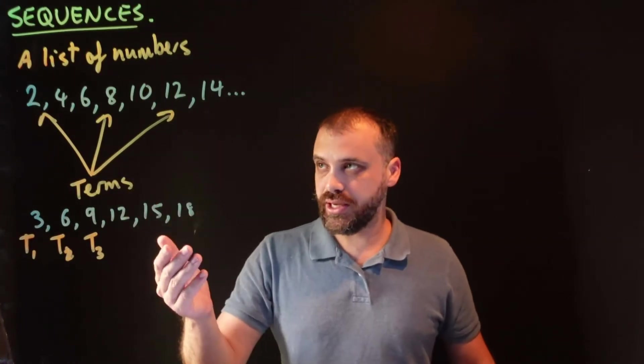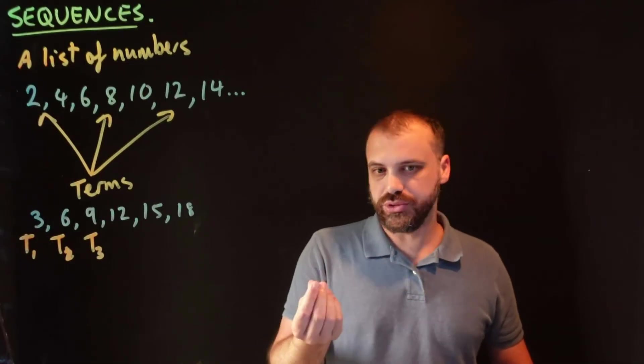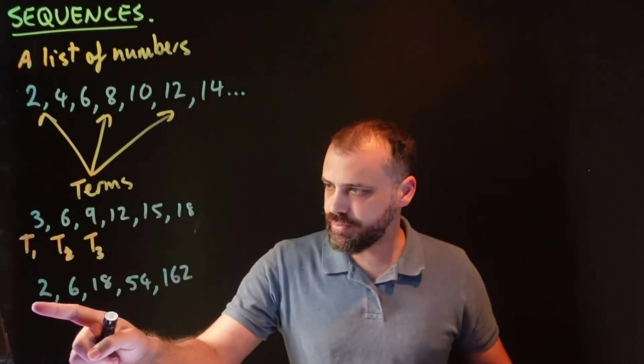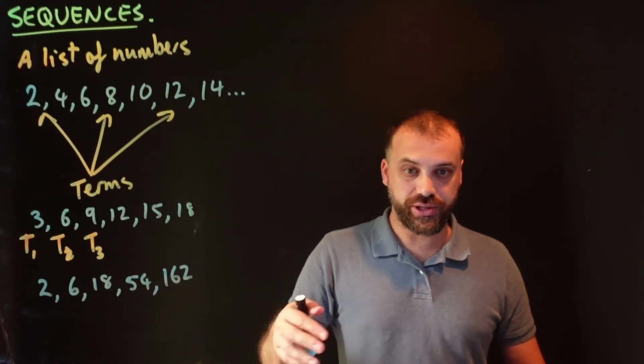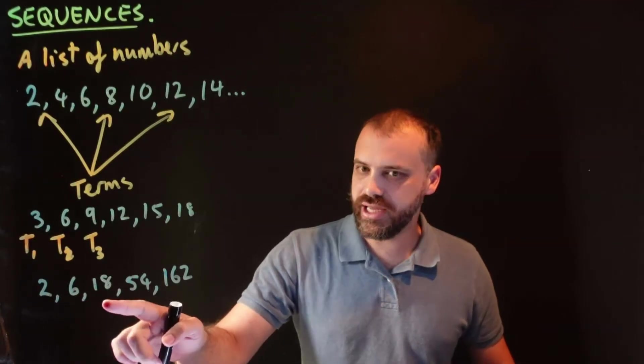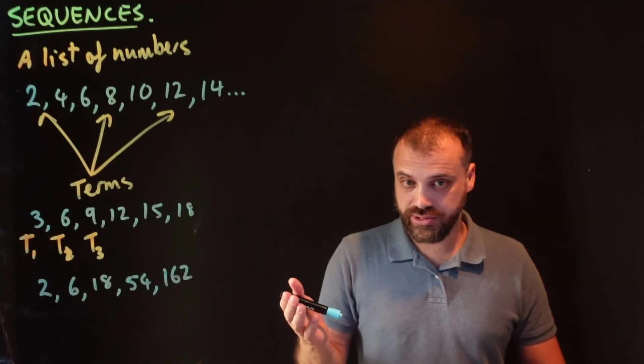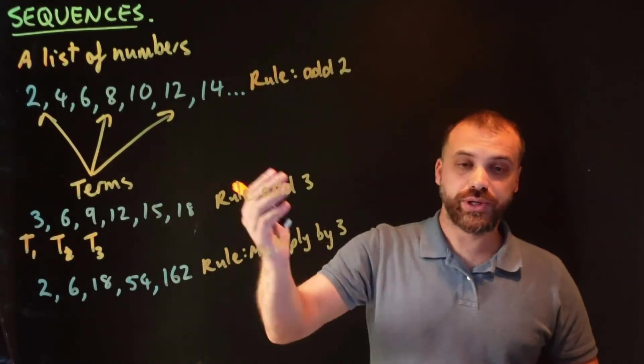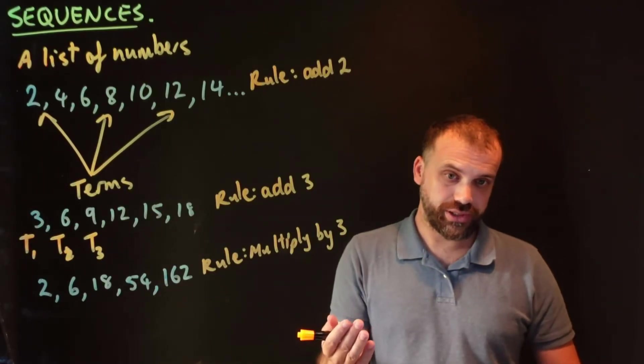Sequences don't have to be counting up in twos or counting up in threes. We can come up with all sorts of different sequences. For example, this sequence here, I'm multiplying each term by 3. 2 times 3 is 6, 6 times 3 is 18, 18 times 3 is 54, and so on. There's another sequence. I've just written up that the rule for this one is add 2, the rule for this one is add 3, and the rule for this one is multiply by 3.